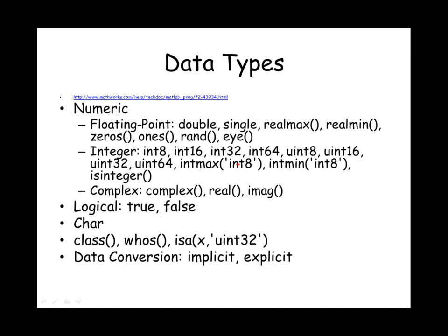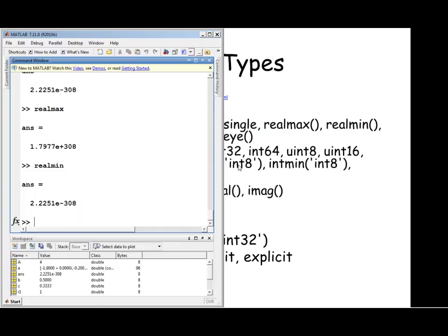Each variable can hold a different data type. In MATLAB, the data types include numeric, logical, and character. Numeric data types include floating point numbers, integers, and complex numbers. Depending on which data type you use, you can store a different range of numbers at a different resolution. By default, numbers created in MATLAB have the double data type. The single data type is also a floating point representation but has a smaller range and coarser resolution. To identify the maximum and minimum representable number, use realmax and realmin functions, giving approximately 10^308 and 10^-308.